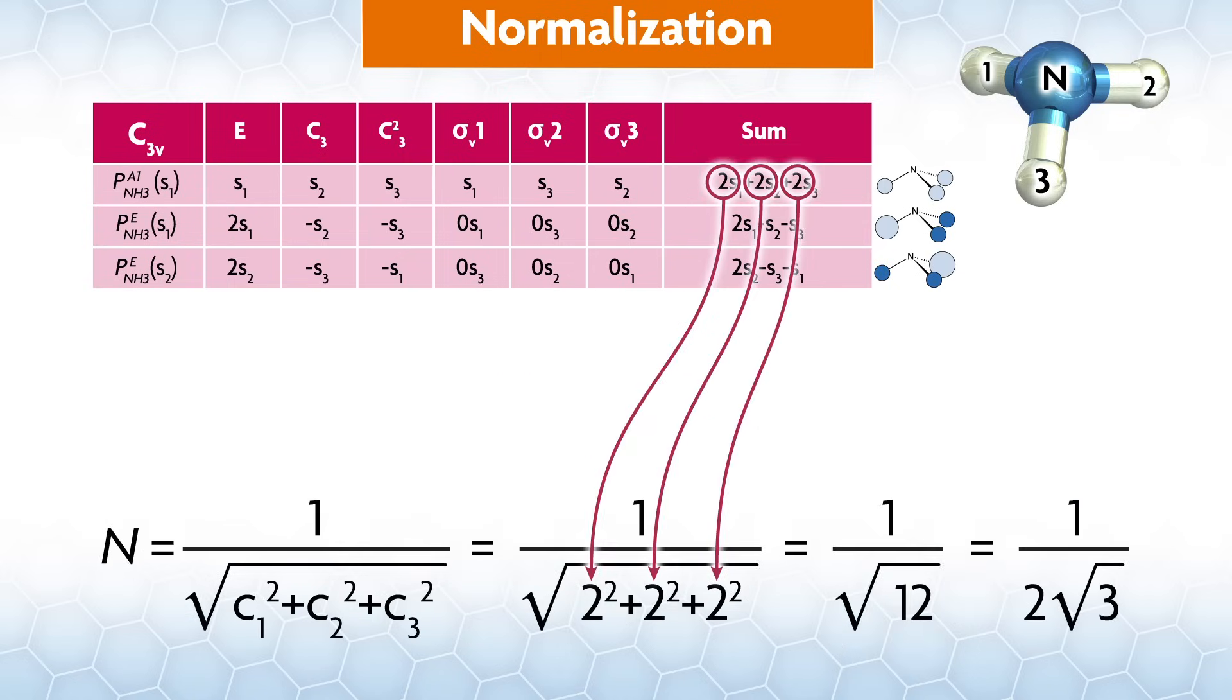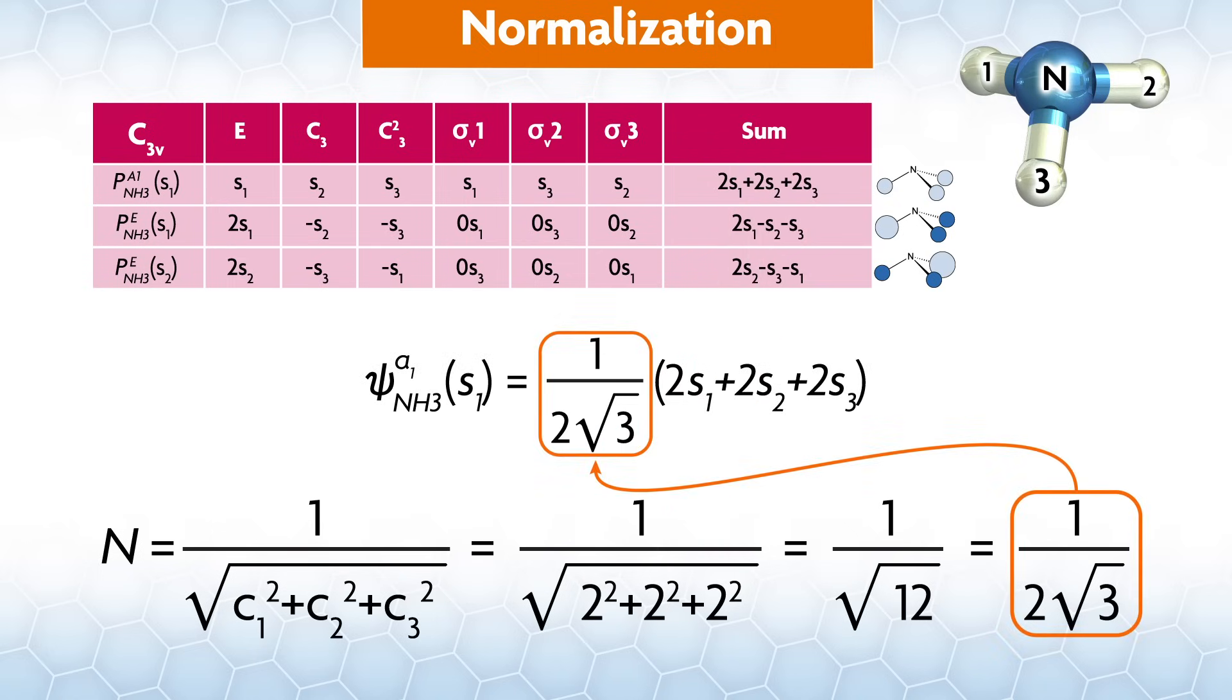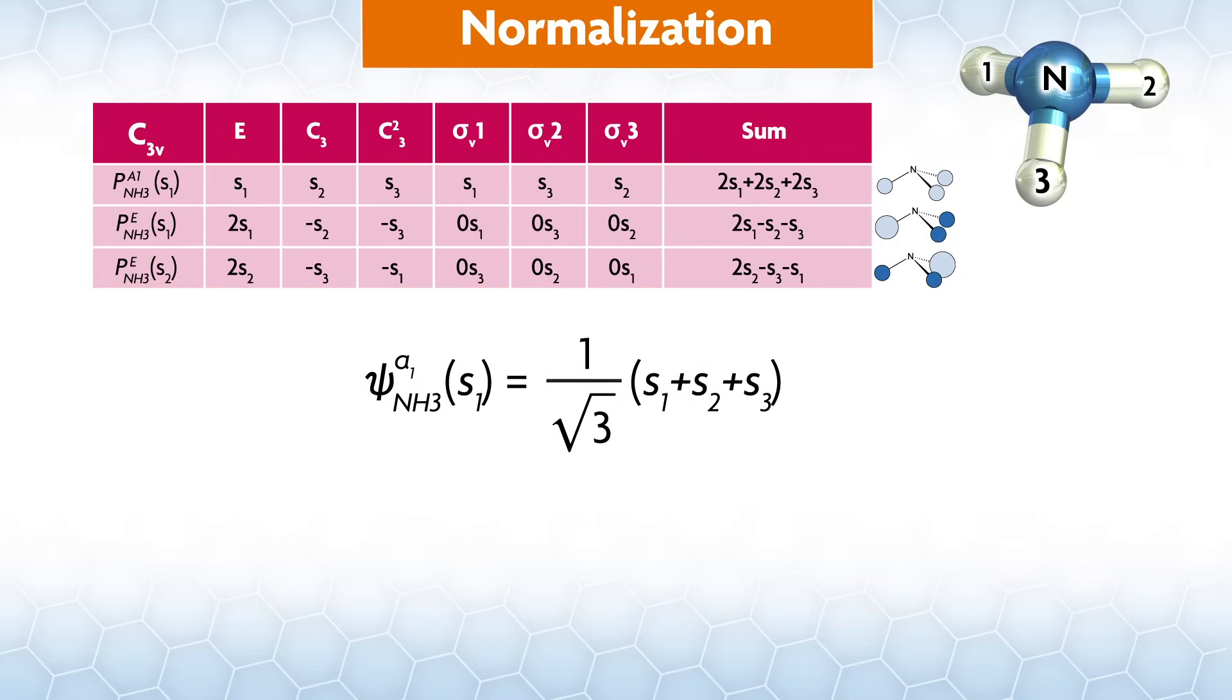Plugging into our equation for normalization gives this. We can place this in front of our projection and call it psi. From here on out, we'll also make one other small adjustment for orbitals. We usually use lowercase letters for the irreducible reps just to further designate that they are orbitals rather than the reps themselves. So we'll use lowercase a1 instead of uppercase a1. We can simplify this a little by dividing the one-half through the terms to give this, which is our normalized wave function.